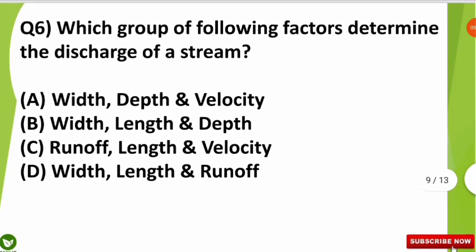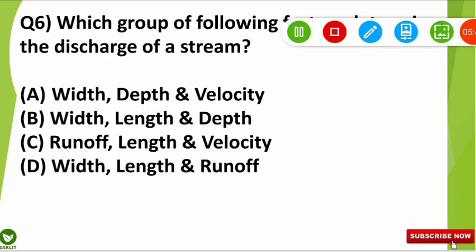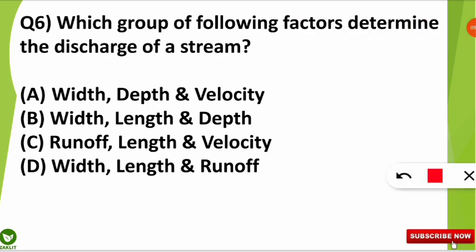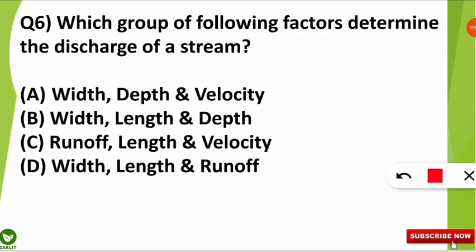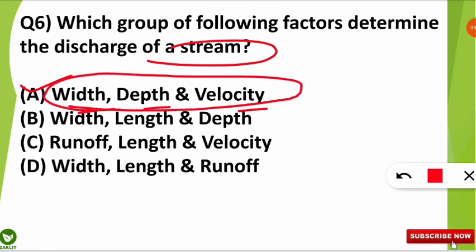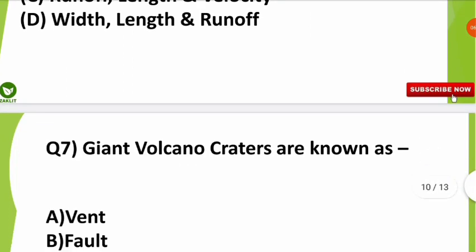The sixth question was: which group of factors determines the discharge of a stream? This question came from the UGC NET examination. The correct option is width, depth, and velocity — these three are the important factors that determine the discharge of any stream.